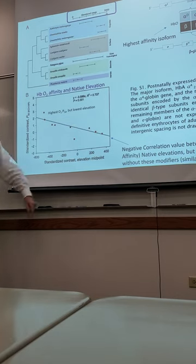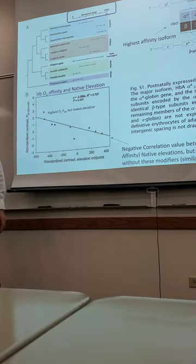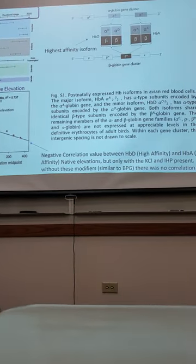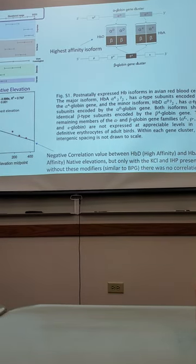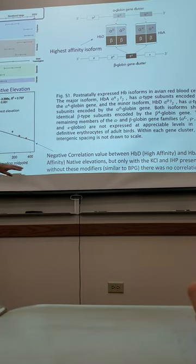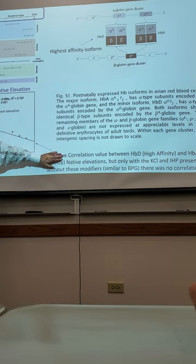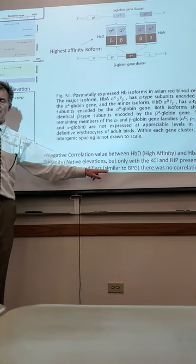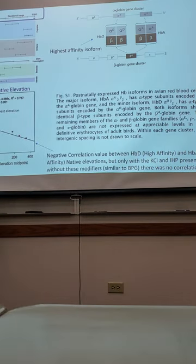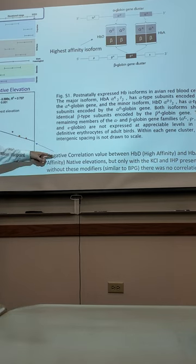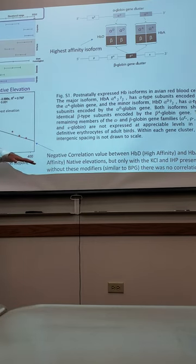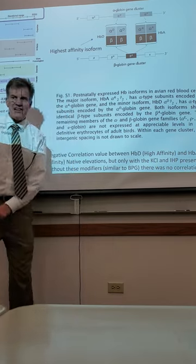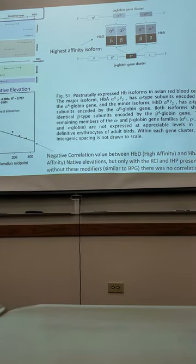Negative correlation value between the high affinity and low affinity native elevations, but only with respect to what? This is only when you see what present with the hemoglobin. They say this is a claim they make, but the actual information was in the supplementary information. Negative correlation exists only with KCL and IHP present. What's the KCL? What's the IHP?